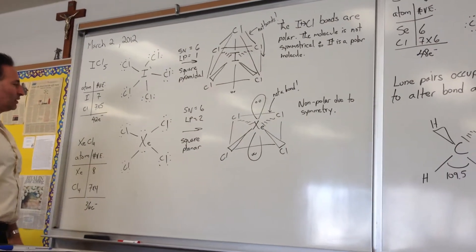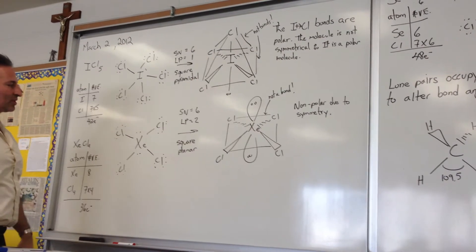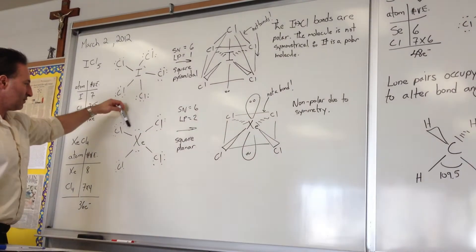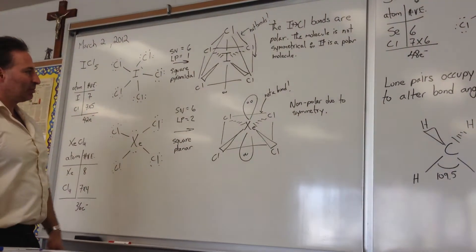Xenon tetrachloride has 36 electrons. Two lone pairs on the central atom, so it has a steric number of 6. Four bonding pairs with two lone pairs. That suggests a square planar geometry.